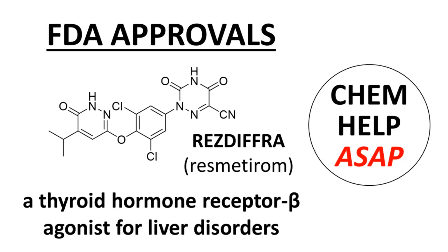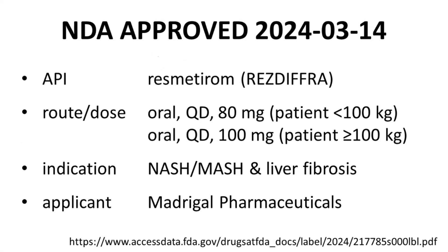Welcome to Chem Help ASAP. This video describes the recently approved drug ResDifera, providing a broad overview of the drug's physicochemical and medicinal chemistry properties rather than its clinical pharmacology. ResDifera was approved by the FDA on the 14th of March in 2024. ResDifera is the brand name, and the international non-proprietary name of the active pharmaceutical ingredient is resmetirom. It is approved for oral administration once daily at an 80 milligram dose for most patients, though a higher dose may be used in patients with a higher mass. ResDifera treats a condition called NASH or MASH, which involves liver fibrosis. The NDA applicant was Madrigal Pharmaceuticals.